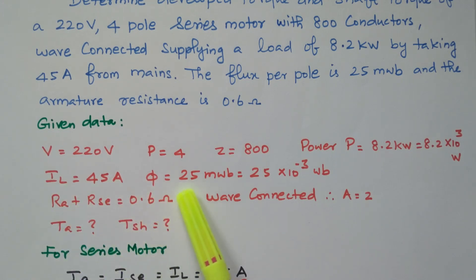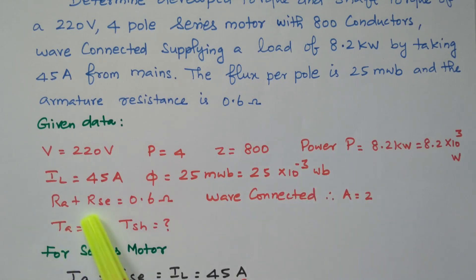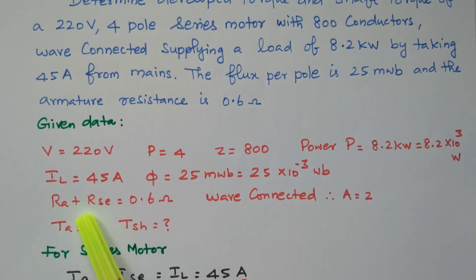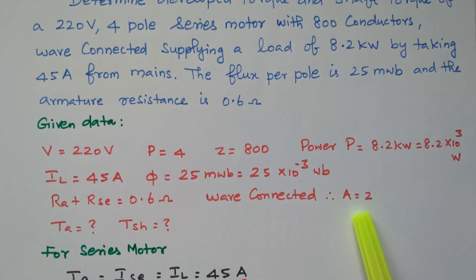The flux is 25 milliweber — milli means 10 to the power minus 3 — so 25 into 10 to the power minus 3 Weber. Then RA plus RSE, the armature resistance, because it is a series motor, together is given as 0.6 ohm. Since it is wave connected, the number of parallel paths equals 2.